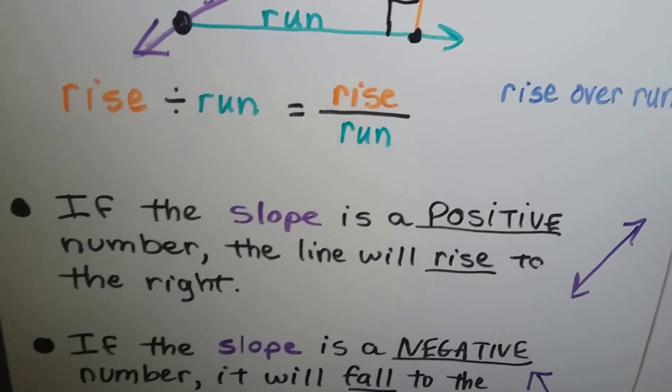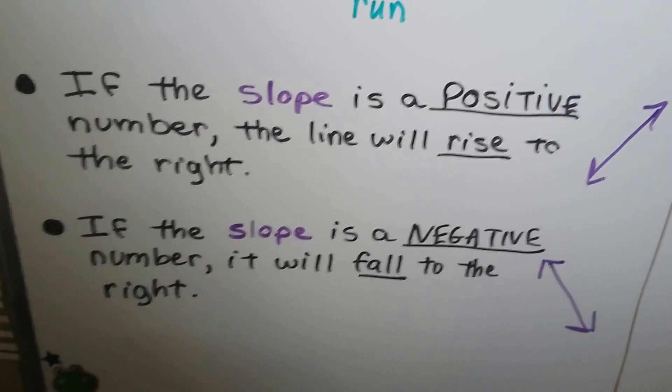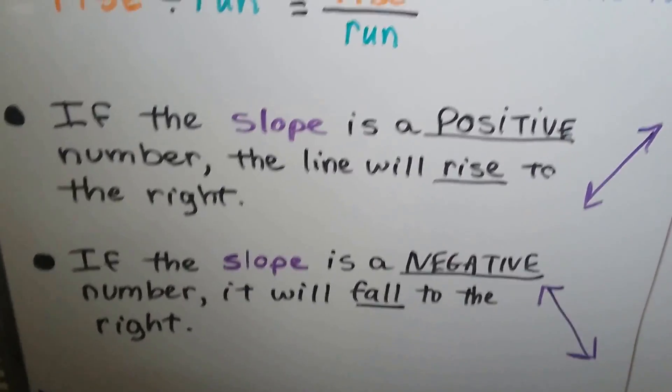If the slope is a positive number, the line will rise to the right, and if the slope is a negative number, it'll fall to the right.